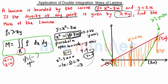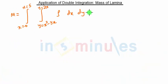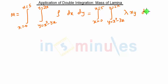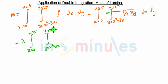Rho is given as lambda times x times y. So we can write rho as lambda · x · y dx dy. Since we are first integrating with respect to y, lambda times x is constant and can be taken outside the y-integration. Lambda itself is a constant and can be taken outside the x-integration as well. So we have x going from 0 to 5, y going from x² - 3x to 2x, and we write x dy dx.